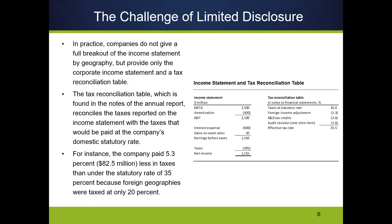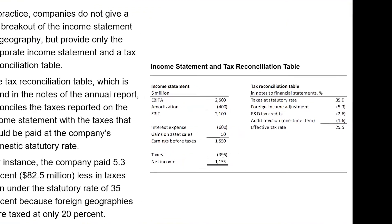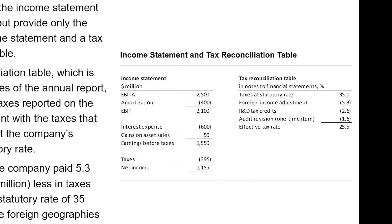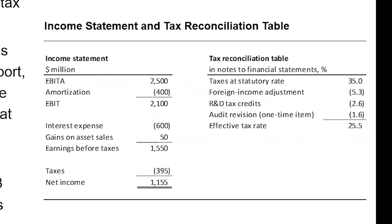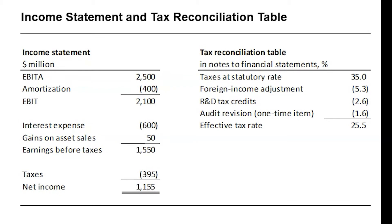What we are often provided is something called the tax reconciliation table. It's going to be in the footnotes somewhere in the 10-K — we'll have to go dig it out. The tax reconciliation table tells us how we get from the parent statutory rate — here the parent is the domestic subsidiary with a statutory rate of 35% — to the effective rate of 25.5%, which is 395 million in taxes. That's how we calculate the effective rate.